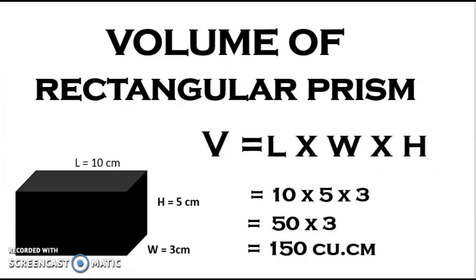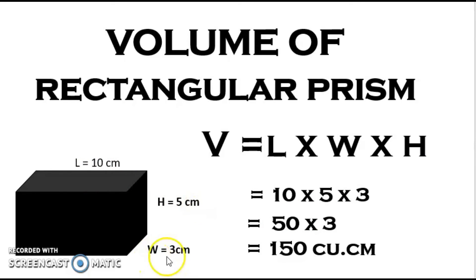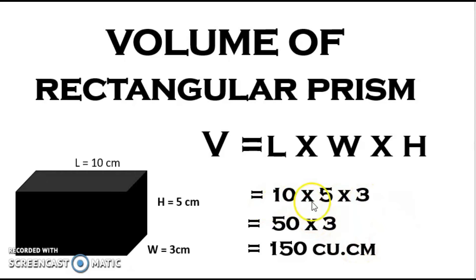Next is the volume of a rectangular prism: V equals length times width times height. For example, length is 10 cm, height is 5 cm, and width is 3 cm. We multiply all three sides: 10 times 5 times 3 — so 10 times 5 is 50, times 3 gives us 150 cubic centimeters.